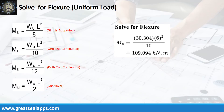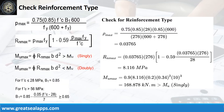Given factored load of 30.304 kN per meter and L equals 6 meters, the maximum moment is 109.094 kN·m. The ρ-max from the given design criteria is 0.03765, then RN-max is 8.116 MPa, and finally MU-max is 168.878 kN·m — greater than 109.094 kN·m — confirming singly reinforced beam design.